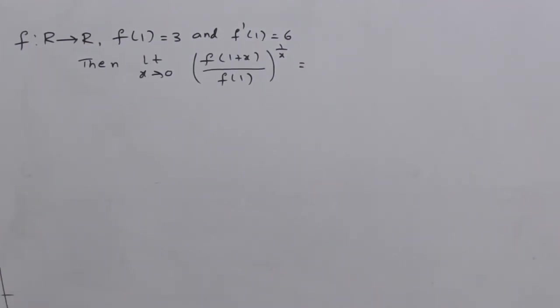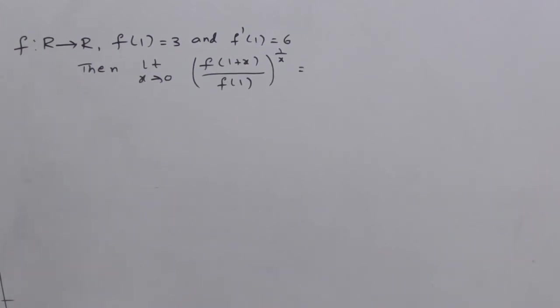f: R to R, f(1) equal to 3 and f'(1) is equal to 6. Then limit x tends to 0, f(1+x) by f(1) whole to the power 1 by x.